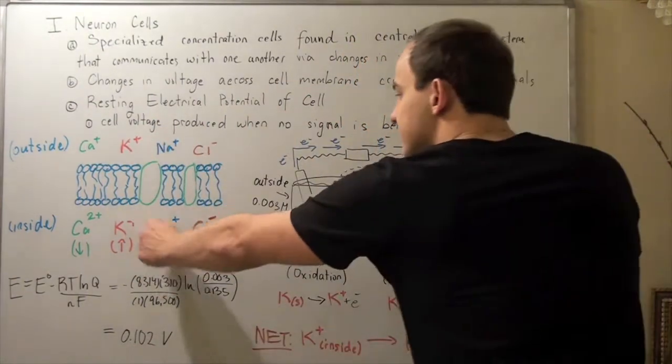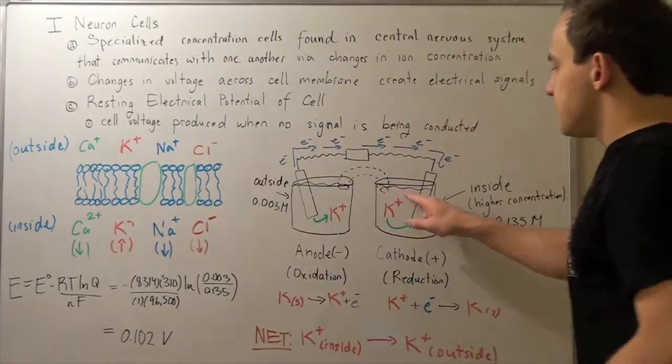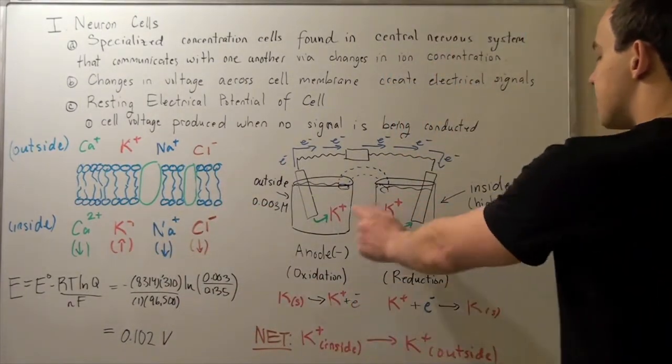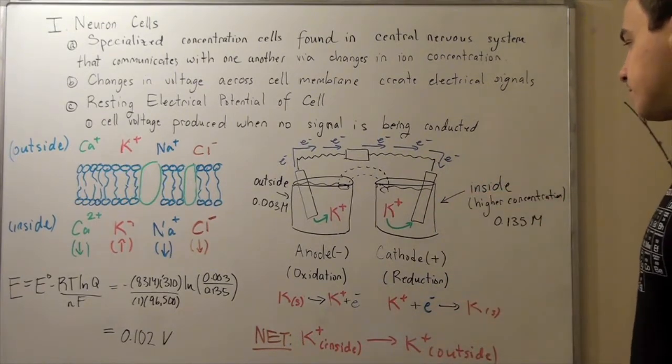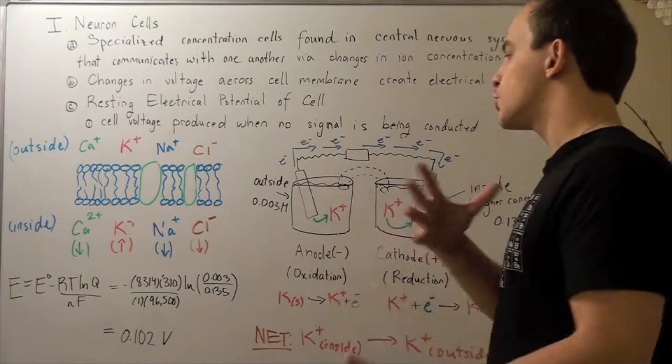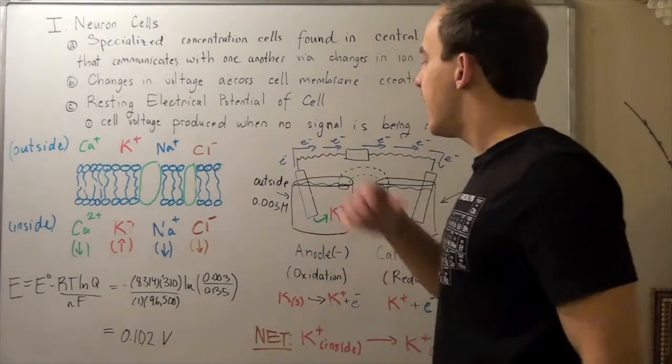Likewise, these ions on the inside here are taken up, because they react with electrons to form our K solid. And this changes the concentration of our inside and outside.